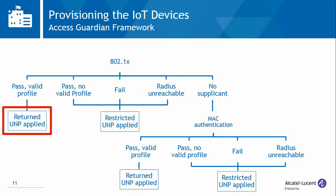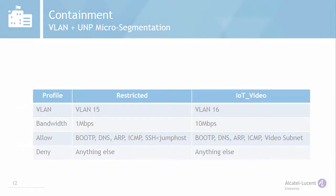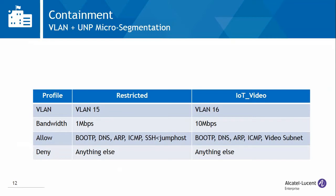In this demo, the IoT device is a video camera and its role is IoT video. We will configure AccessGuardian to assign the restricted role in any other situation — for instance, if authentication fails or authentication is successful but no valid role is returned. We will also enable MAC authentication as a fallback mechanism for devices that do not support 802.1X. In that case, the failed authentication record shows the MAC address that needs to be whitelisted. Containment at the access switch is VLAN-based. The restricted container maps to VLAN 15 and the IoT video container maps to VLAN 16.